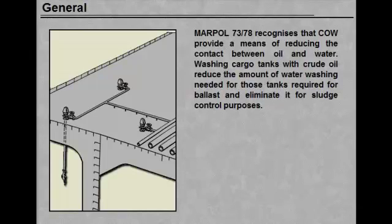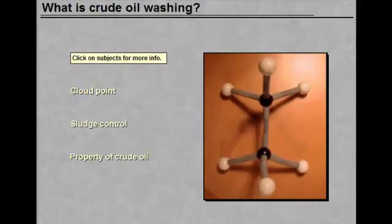MARPOL 73/78 recognises that crude oil washing provides a means of reducing the contact between oil and water. Washing cargo tanks with crude oil reduces the amount of water washing needed for those tanks required for ballast, and eliminates it for sludge control purposes.